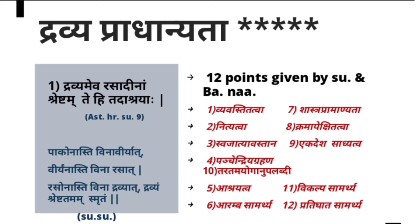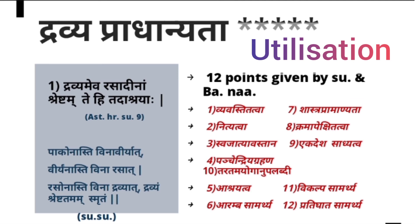If the Dravya attains Pakvavastha, its Gunas also attain Pakvavastha. So Dravya is independent — it grows by itself — while Rasadi Gunas are dependent on the Dravya's growth. Therefore Dravya is again Pradhana. The ninth point is Ekadesha Sadhyadva — fraction isolation. Different parts of a Dravya can be used: Kshira, Tvak, Sara, Niryasa, Nala, Swarasa, Pallava — different parts for different formulations.